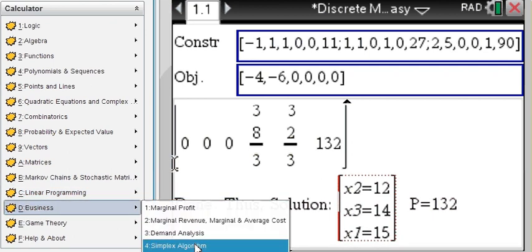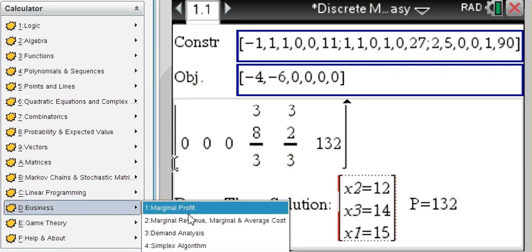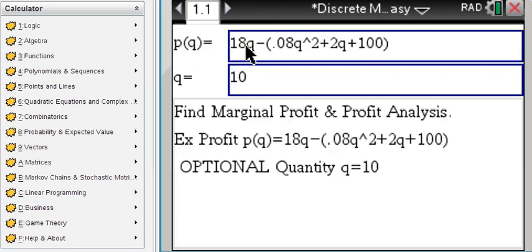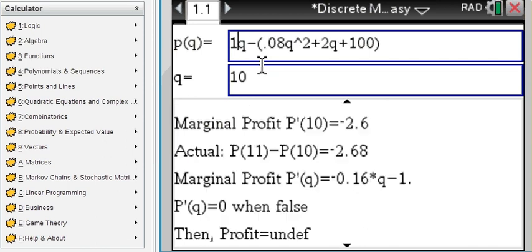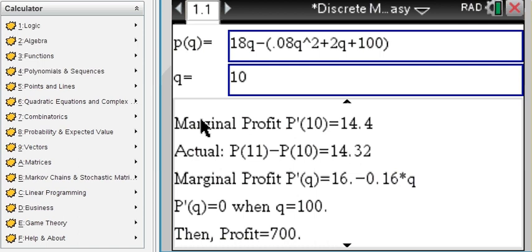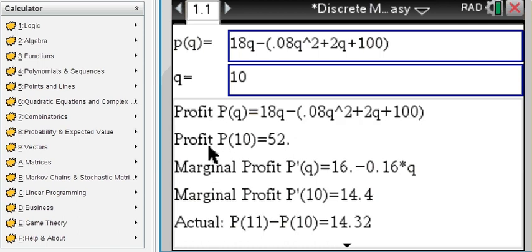Business simplex algorithm demand analysis marginal profit everything. Let's look at marginal profit. You enter a price function depending on quantity, so your profit will be computed, you will be evaluated and also your marginal profit will be found and computed. You can compare that to the actual profit.